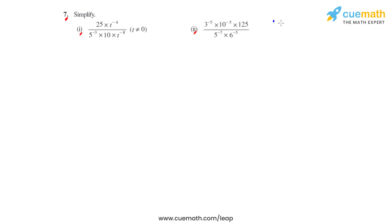The first law is: a raised to m times a raised to n equals a raised to m plus n. That is, when bases are the same and they are in multiplication, the powers get added.